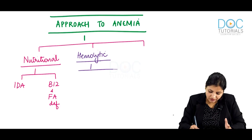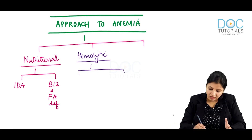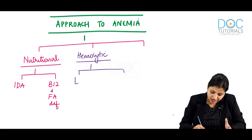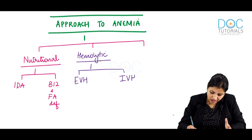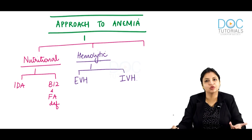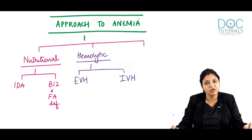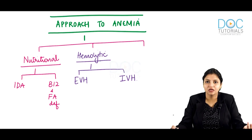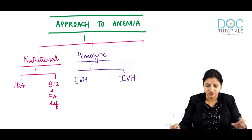Hemolytic anemias are further classified into two types: extravascular hemolysis or intravascular hemolysis — that is, where is the hemolysis occurring? Whether it is occurring outside the blood vessels in organs like the spleen and liver, or inside the vessel itself — intravascular.